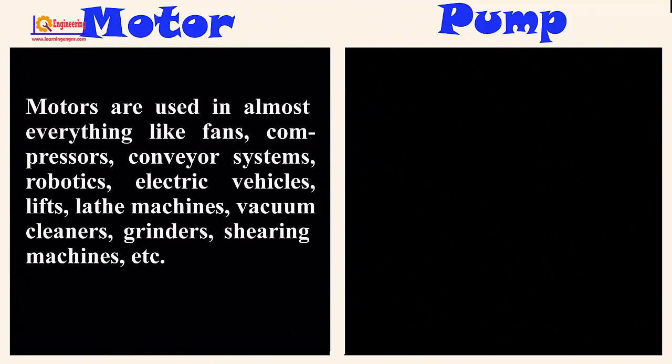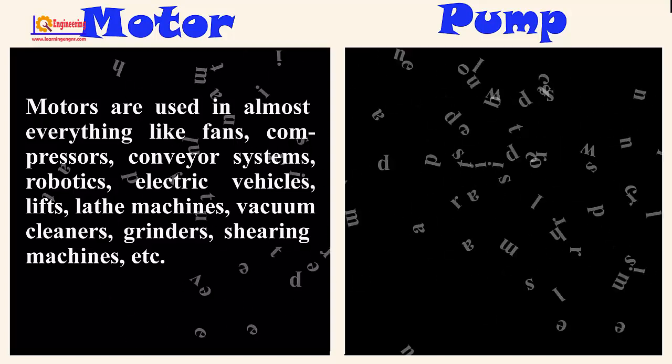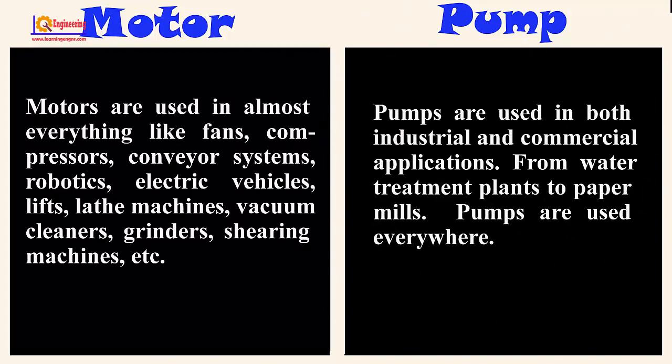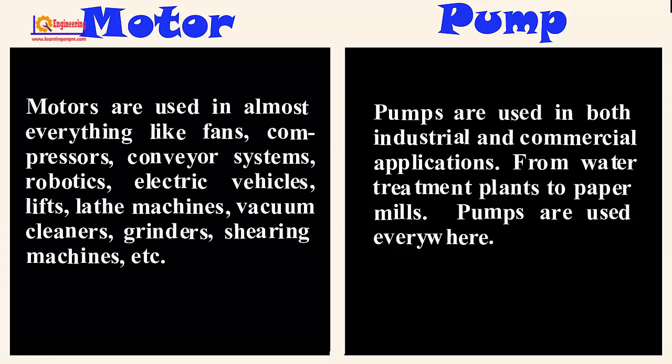Motors are used in almost everything like fans, compressors, conveyor systems, robotics, electric vehicles, lifts, lathe machines, vacuum cleaners, grinders, shearing machines, etc. Whereas pumps are used in both industrial and commercial applications. From water treatment plants to paper mills, pumps are used everywhere.